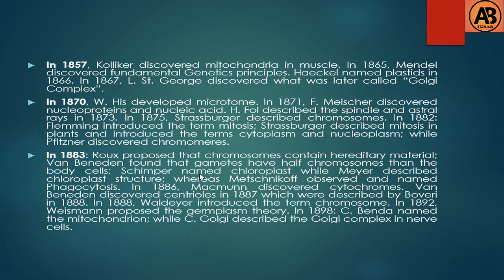In 1857, Kölliker discovered mitochondria in muscle. In 1865, Mendel discovered fundamental genetics principles. Haeckel named plastids in 1866. Golgi discovered what was later called the Golgi complex in 1870.